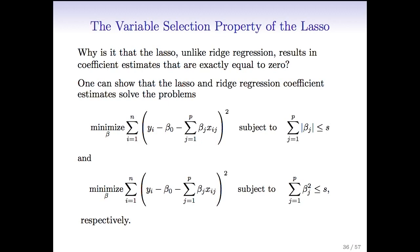For ridge regression, you get exactly the same analogy, but now the budget is in terms of the sum of squares. So again, this is equivalent to the Lagrange formulation for ridge regression we saw earlier.